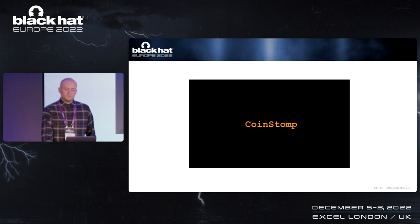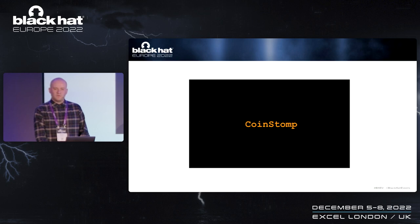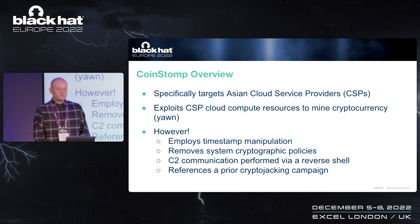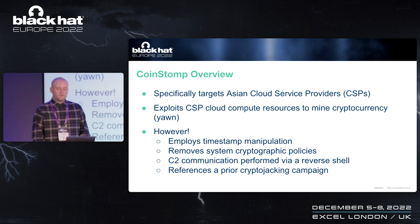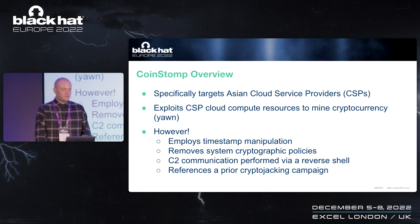Let's move on to discuss our first malware family, CoinStomp. CoinStomp is a cryptojacking malware campaign which exploits resources hosted primarily by Asian cloud service providers such as Tencent and Alibaba Cloud. There are theories about why these CSPs are specifically targeted — it could be due to the attackers' location, or because newer CSPs may have less mature security controls, making it more likely that instances will be deployed in an insecure fashion.